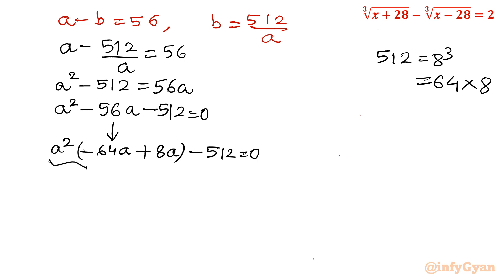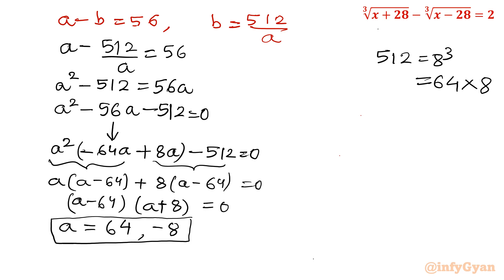So I will write a square minus 64a plus 8a. Central term minus 64 plus 8 is minus 56. Now I will take a common from these two. So I will get a minus 64, and from these two terms I will take 8 common, so a minus 64. Overall I will have a minus 64 in one parenthesis and a plus 8 in other. So in totality I am having a equal to 64 or minus 8.